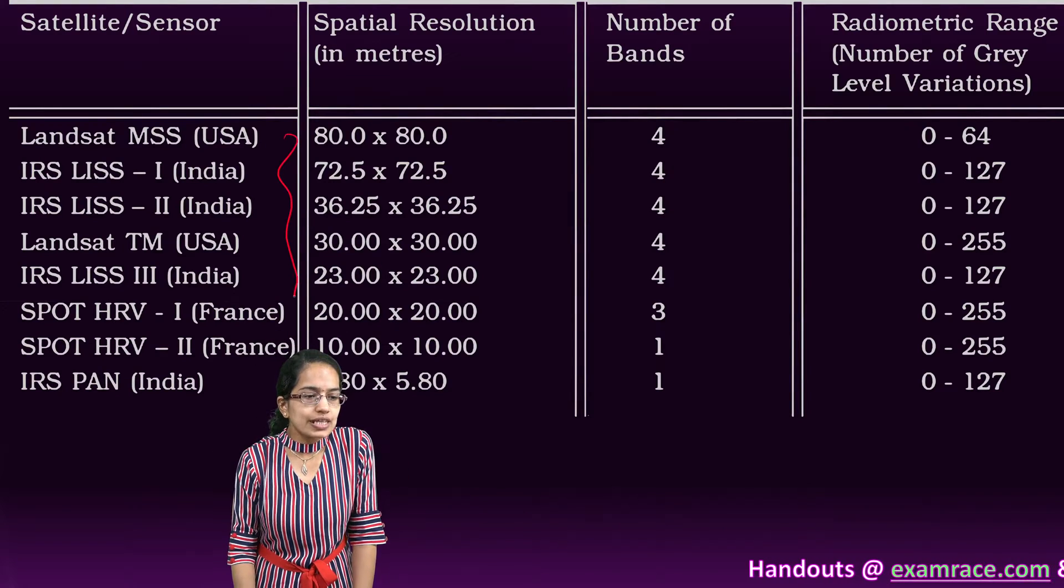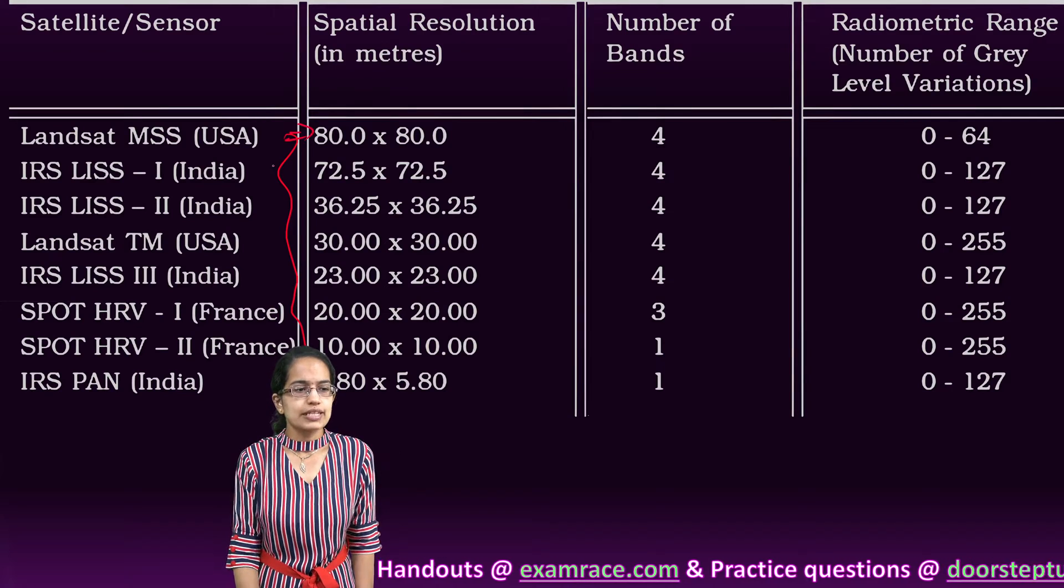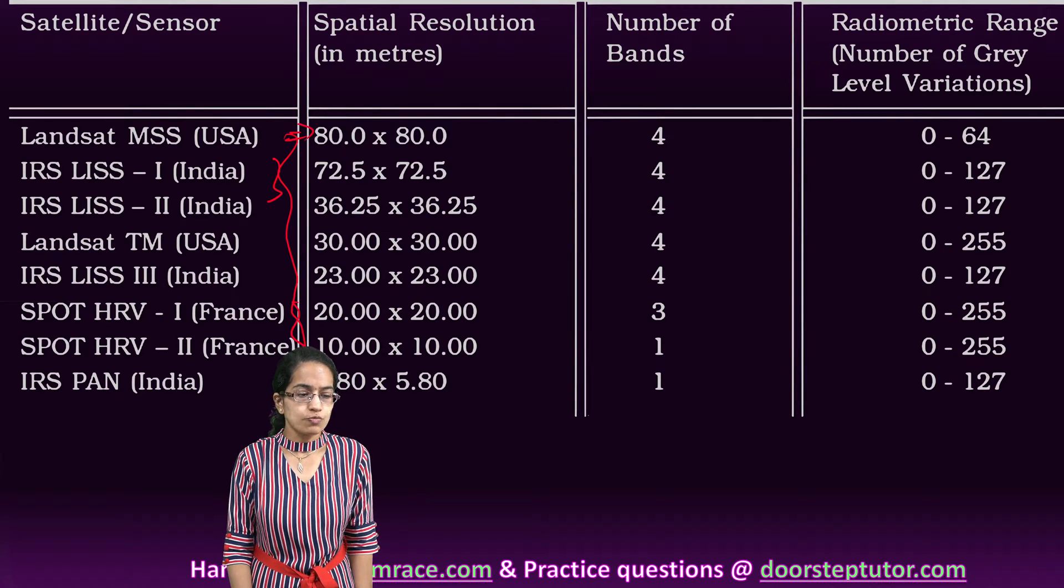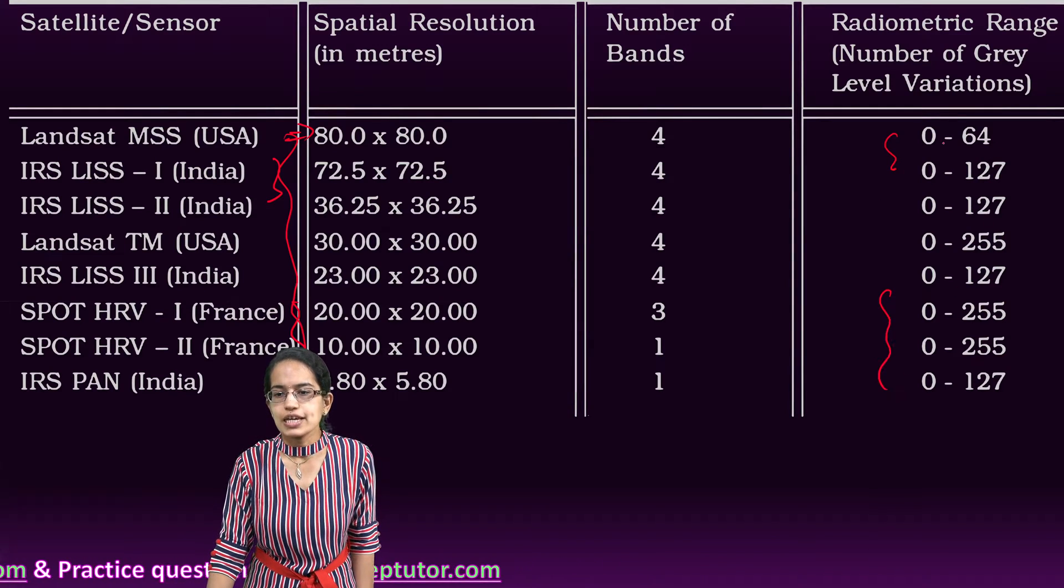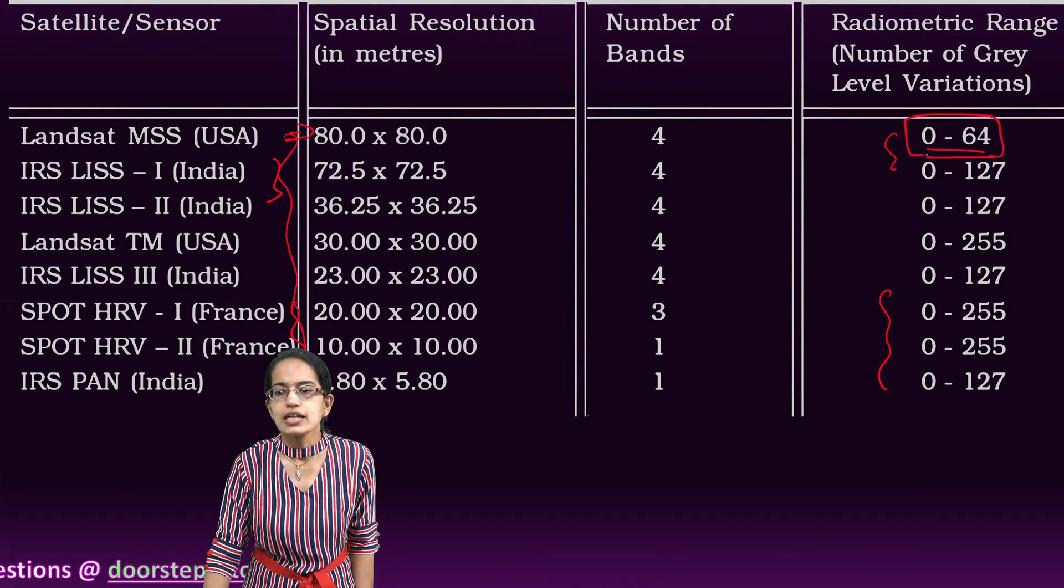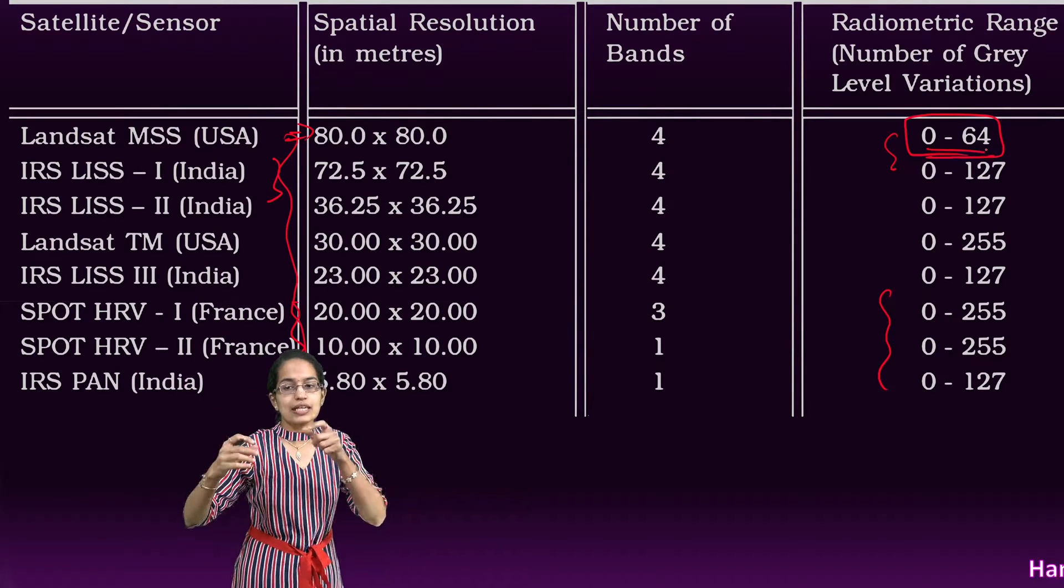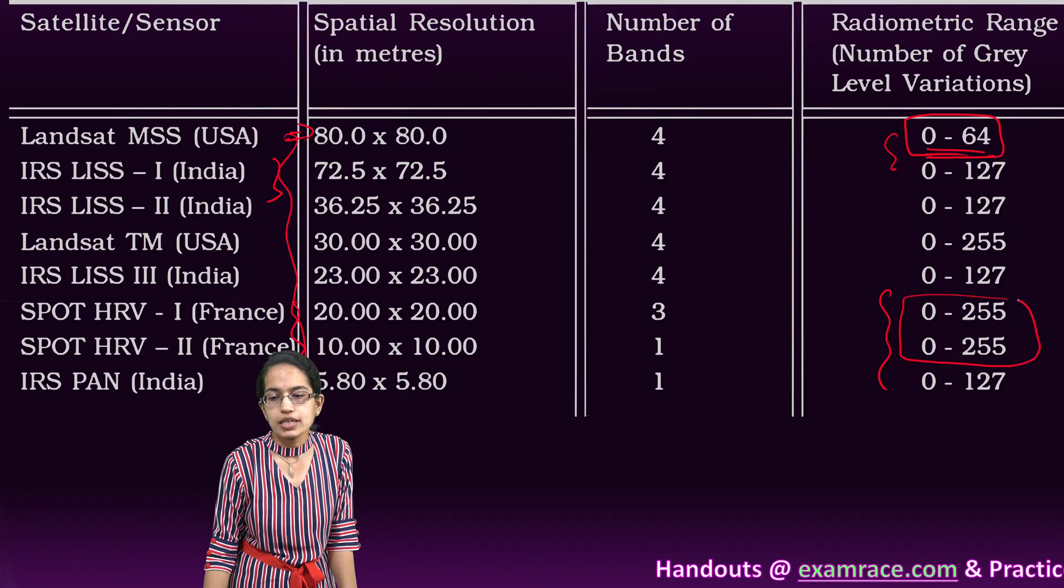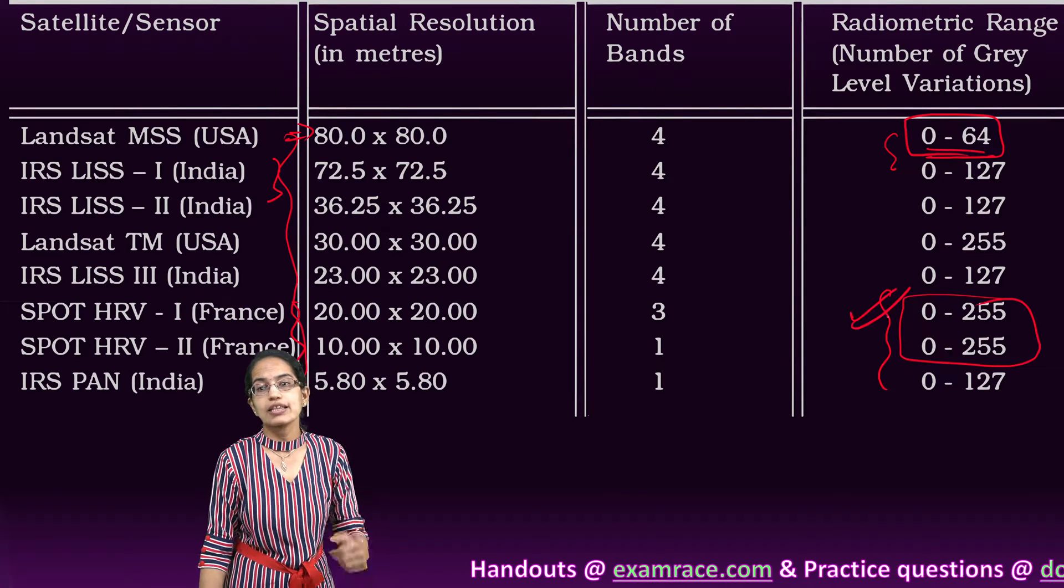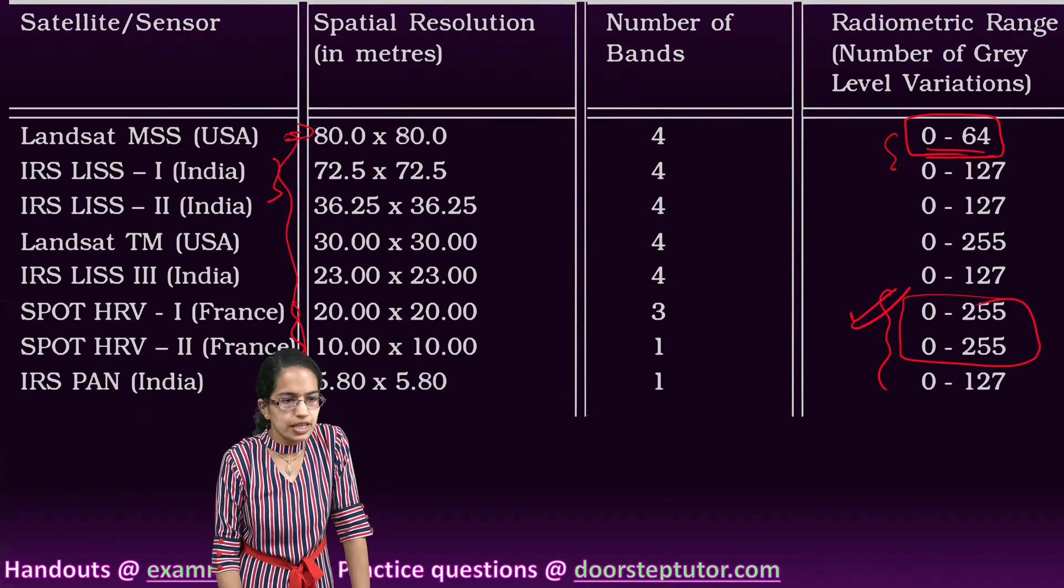Now we have various satellite sensors that are used across the globe, some from United States, some from India, some from France, and we see the radiometric range varies. When the radiometric range is smaller, that means the amount of intensity that we are seeing is less compared to the SPOT HRV where the intensity is very high. And therefore the radiometric range, the variations within the gray we would see, is very high.